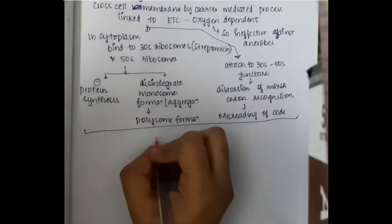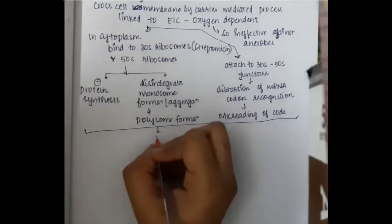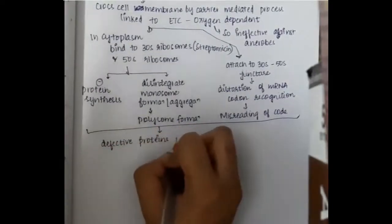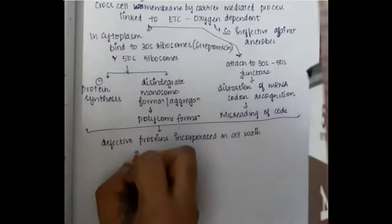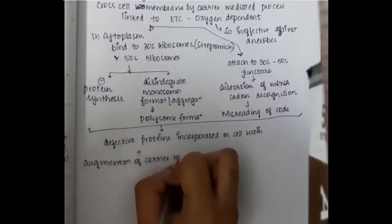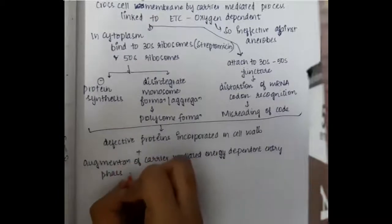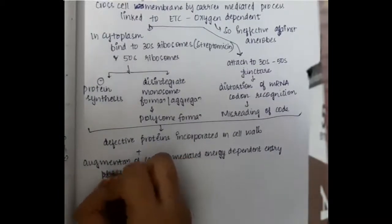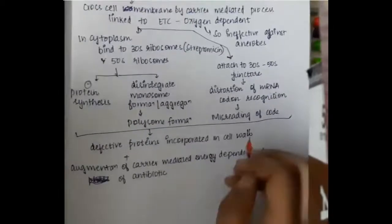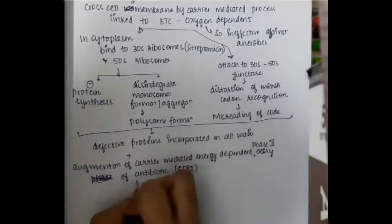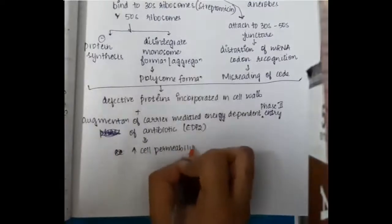Binding to the 30S–50S ribosome junction causes misreading of the genetic code. This results in defective proteins being incorporated into the cell wall. These defective proteins, along with augmentation of the carrier-mediated energy-dependent phase-two entry (EDP2), increase cell permeability and ultimately cause cell death.